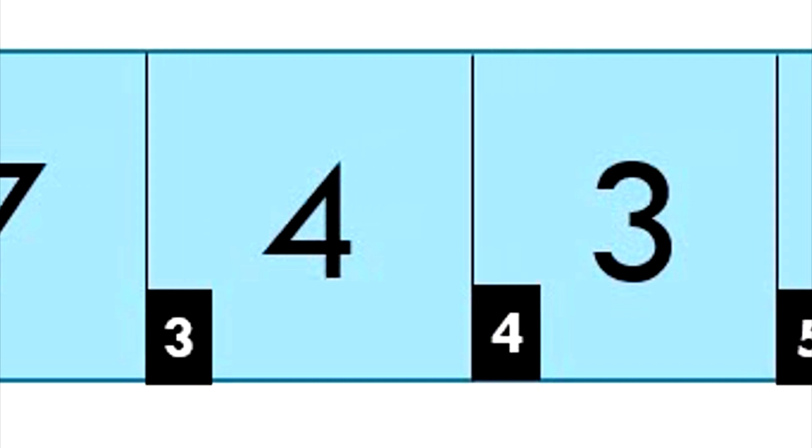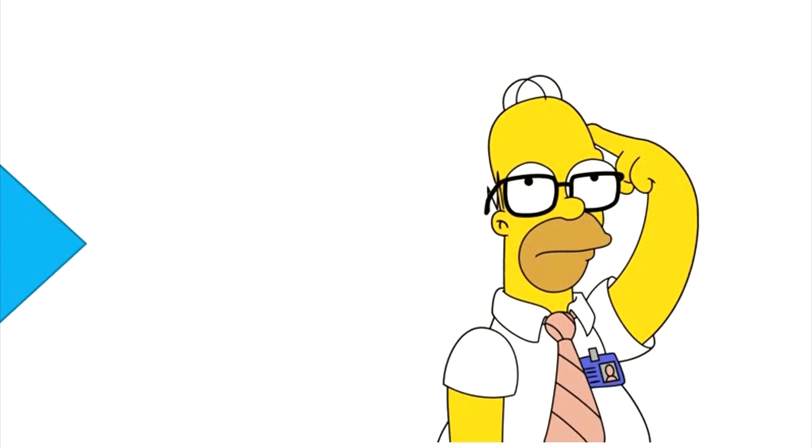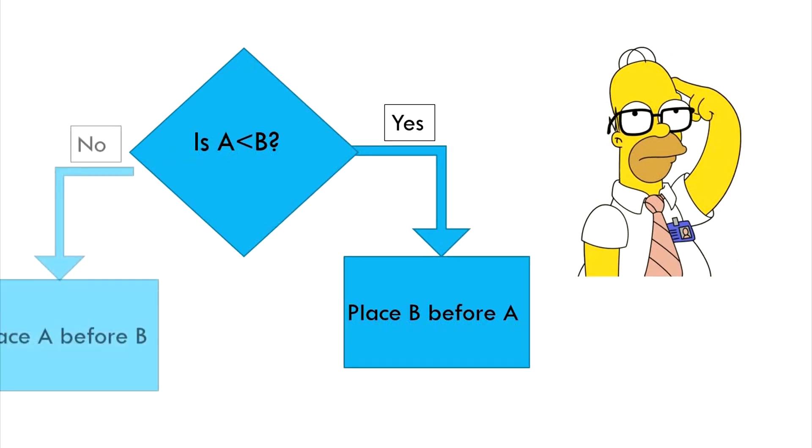Again, like before, we are comparing the magnitude of these numbers. If the magnitude of one number is smaller than the magnitude of another, we are placing the latter number before the former.